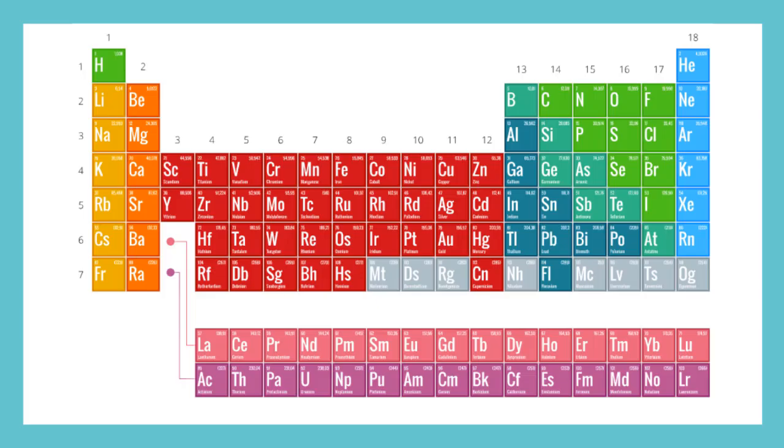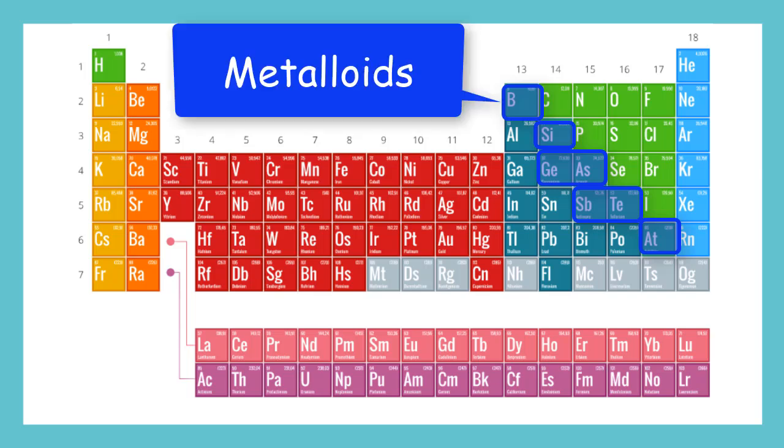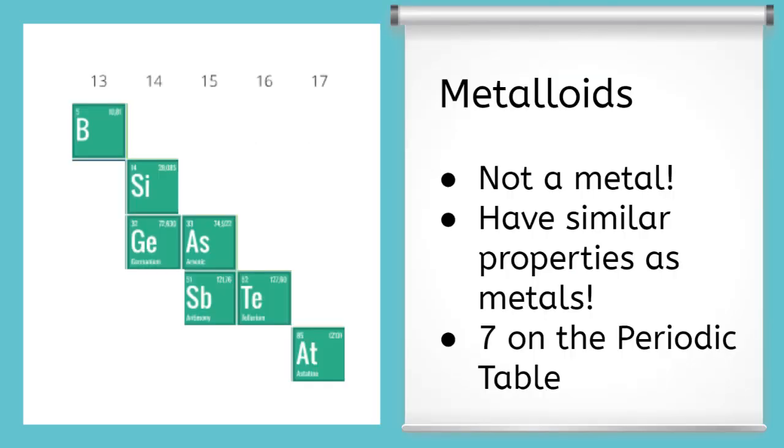Now, what if something is sort of like a metal, but not exactly? That's what we call this staircase of elements in groups 13 through 17. These we call the metalloids. Metalloids are not metals. But they have a lot of the same properties as metals. And there are 7 of them on the periodic table.